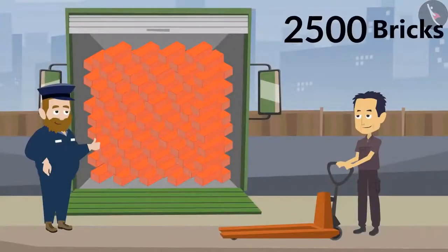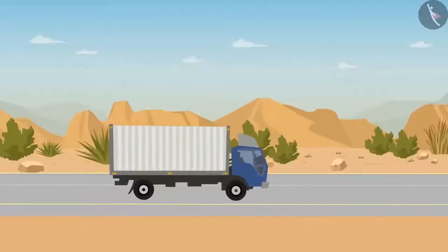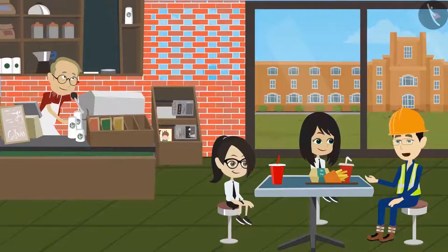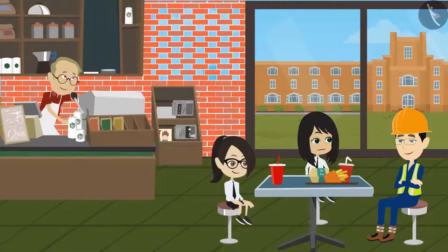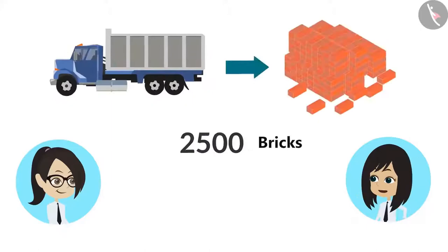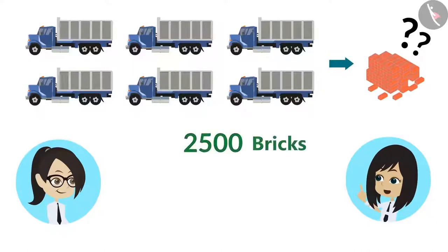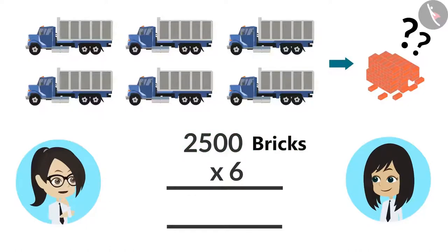One truck has about 2500 bricks. To build this canteen, 6 trucks of bricks were used one by one, and all the bricks were used in building this canteen. That is why I said 6 trucks of bricks. Now I understand. We can count the total number of bricks. How? It is very easy. One truck has 2500 bricks. So to calculate the total number of bricks, multiply 2500 by 6, right?